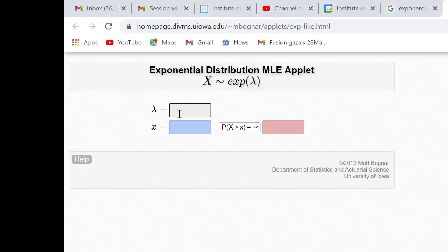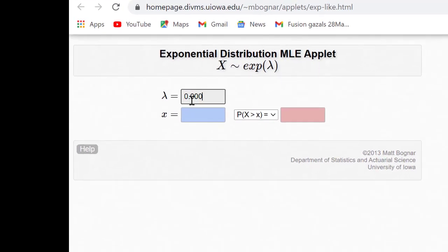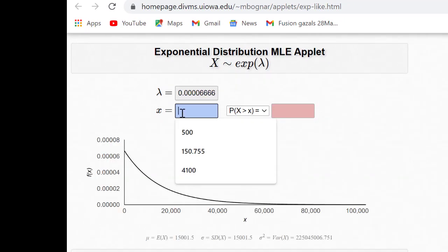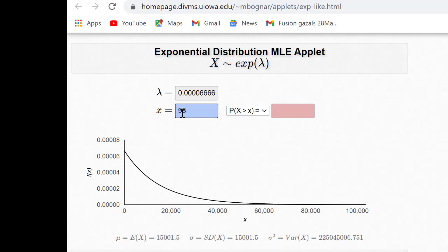We can also use an applet from University of Iowa where you have to put the lambda value as 0.00006666 and x you have to put whatever time you want and that is 985.5 and if you put probability of x greater than x then you will get a reliability value.